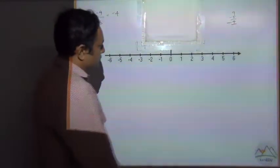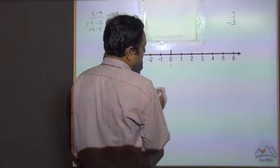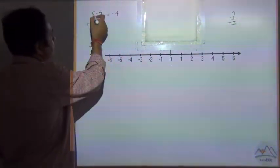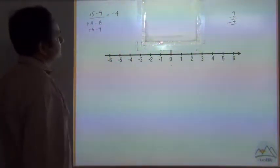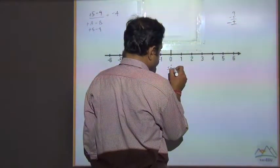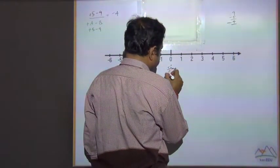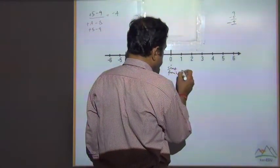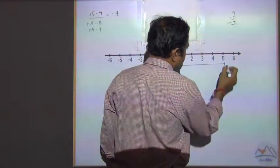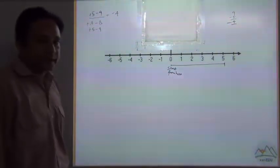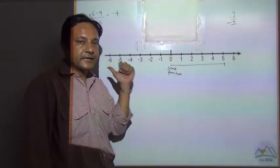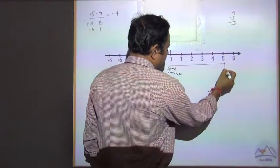So how to do this question on the number line? You will start from 0, and since this 5 means it's a plus 5, you will move up to 5. Now you have to subtract, which means you have to go back on the left hand side. So go back 9 numbers.